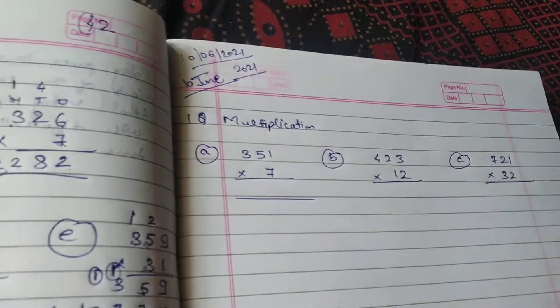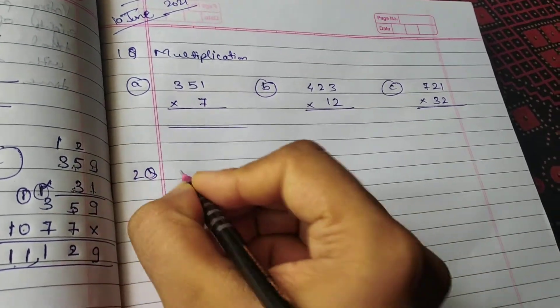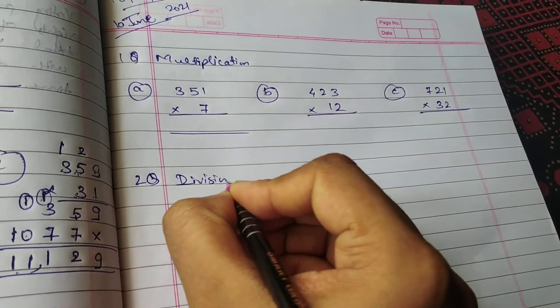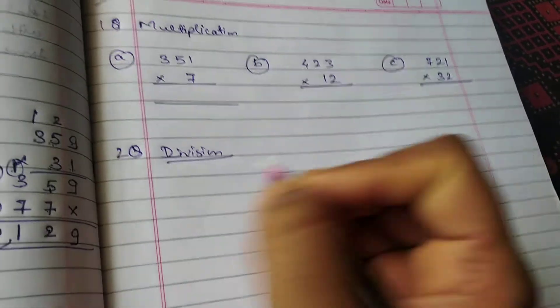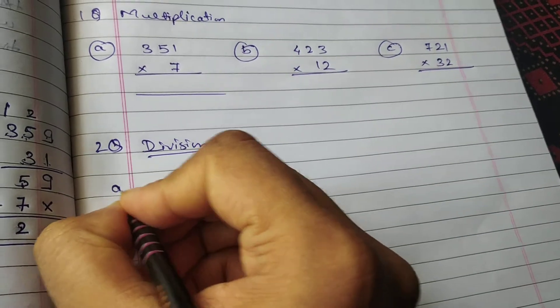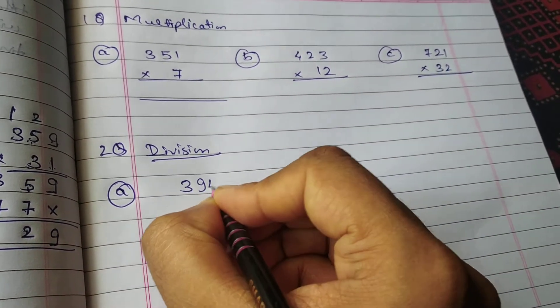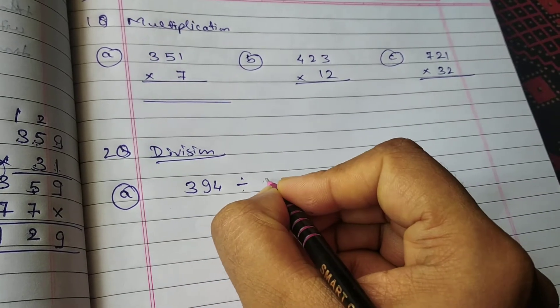Okay, so aapko itna complete karna hai and today we are going to learn about the division. Okay, division sabko aata hai. Okay, so suppose question is hum simple se start karenge. Okay, 394 divided by 4.